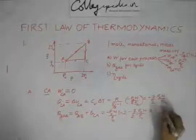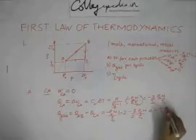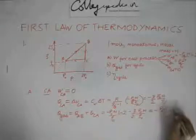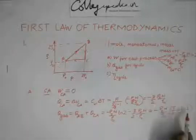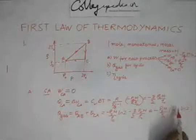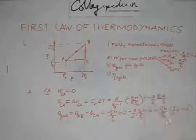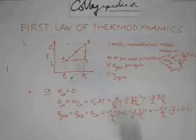So this is the net heat rejected by the gas, which can be written as minus P0V0 by R0 times (3/2 plus ln 2). If you want to write it numerically, 3/2 is 1.5 and ln 2 is roughly 0.693, so this gives you a result of 2.193.